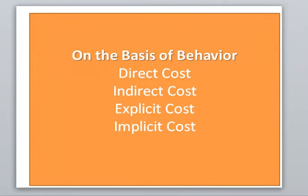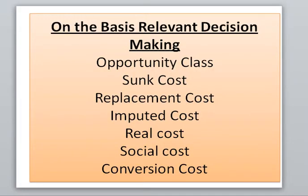According to Behavior of Costs, costs can be classified as Direct Costs and Indirect Costs, Explicit Costs or Implicit Costs — Implicit Costs are also called Economic Costs, and Explicit Costs are also called Accounting Costs. On the basis of Decision Making, costs can be classified as Opportunity Costs, Sunk Costs, Replacement Costs, Imputed Costs, Real Costs, Social Costs, and Conversion Costs.